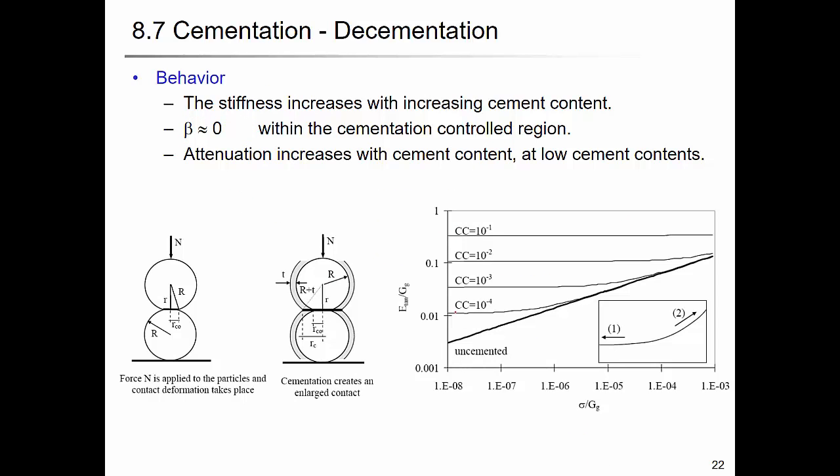Stiffness increases with increasing cement concentration. As you increase the cementing agent concentration, the cementation-controlled region becomes wider and stiffness increases. Within the cementation-controlled region, beta is almost zero - the soil is already stiff - so when you apply stress the shear wave velocity doesn't change much.